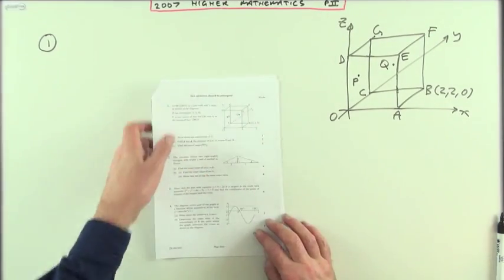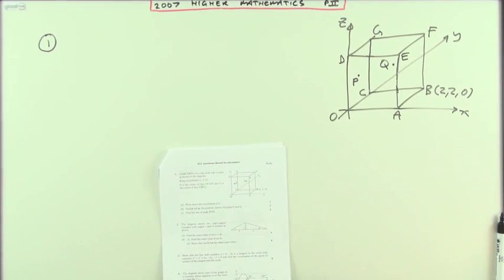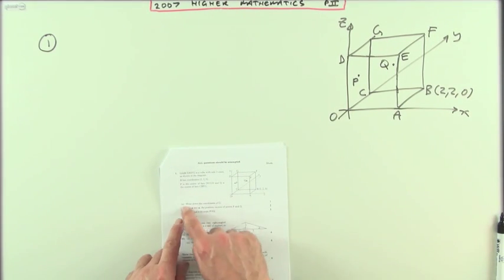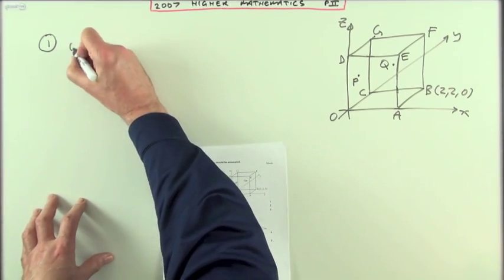Number one from the 2007 Higher Maths Paper. Angle between vectors question, eight marks. Should be nice and easy. It's got three parts, but the first two parts are so short we'll just do them all in one go.